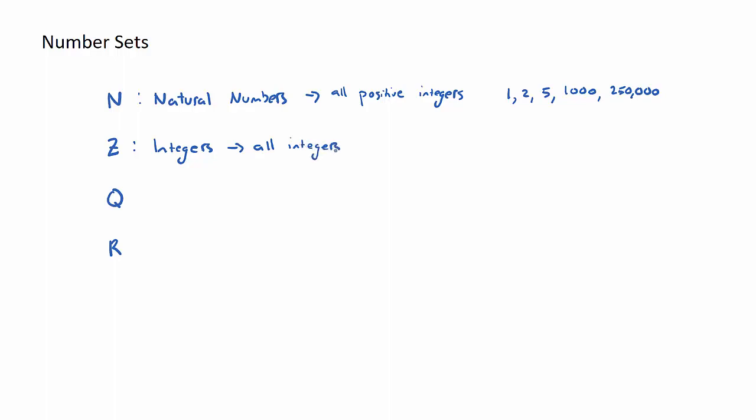So all integers including 0 and negatives. So examples include negative 10, negative 1,000. It also includes 2, 1,000, 240,000.